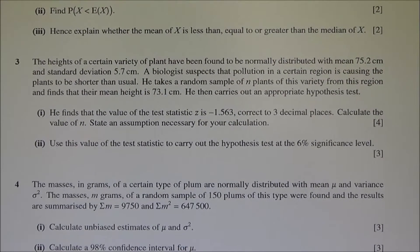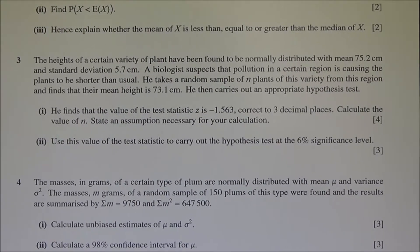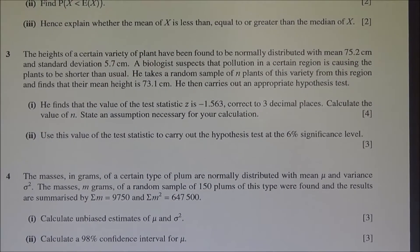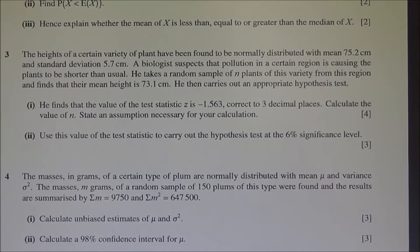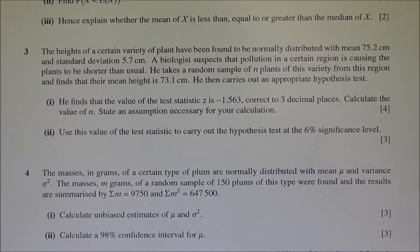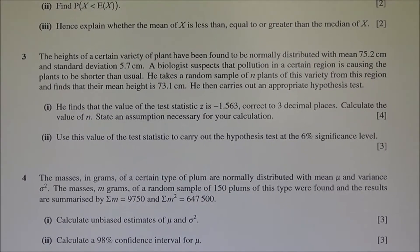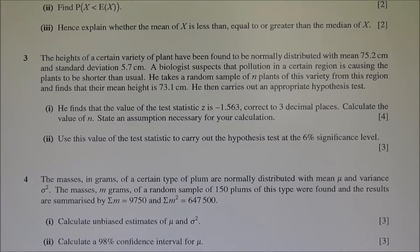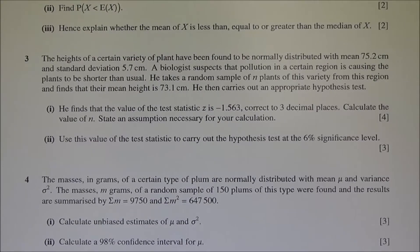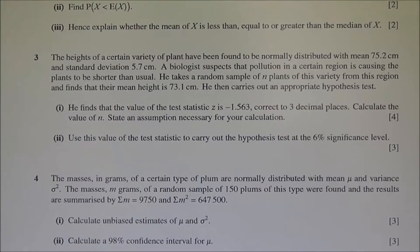Hi, question number 3 taken from June 2013 Advanced Level Maths HSC S2. The heights of a certain variety of plant have been found to be normally distributed with mean 75.2 cm and standard deviation 5.7 cm. A biologist suspects that pollution in a certain region is causing the plants to be shorter than usual. He takes a random sample of n plants of this variety from this region and finds that their mean height is 73.1 cm. He then carries out an appropriate hypothesis test.